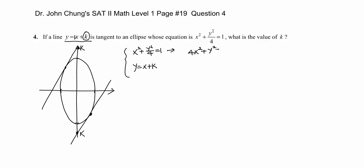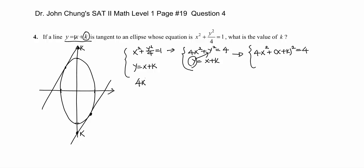Now combine the two equations using substitution for y. So 4x squared plus (x plus k) squared equals 4. Expanding: 4x squared plus x squared plus 2kx plus k squared equals 4. Collecting like terms: 5x squared plus 2kx plus (k squared minus 4) equals 0. This is the combined quadratic equation.